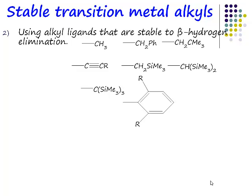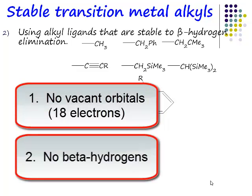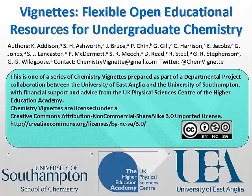So that is another way of stabilising these species. We've got electronic stabilisation, and we've got avoidance of having beta-hydrides in the first place. How are we going to do it now?